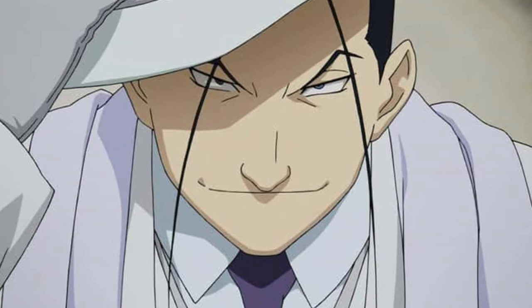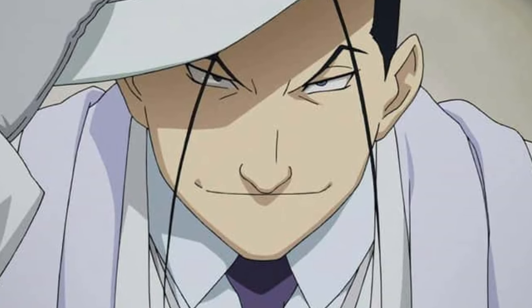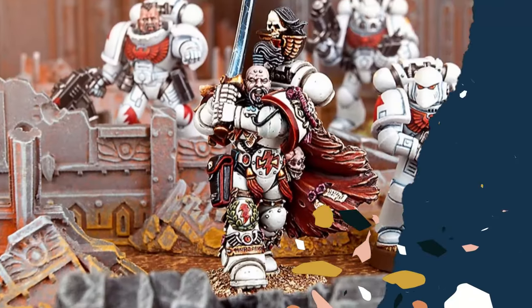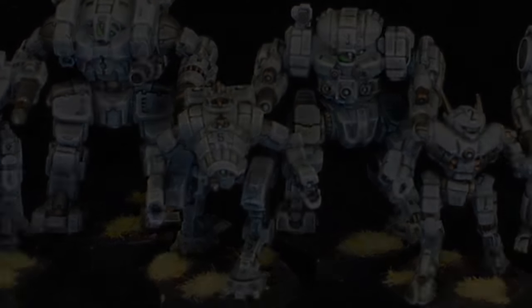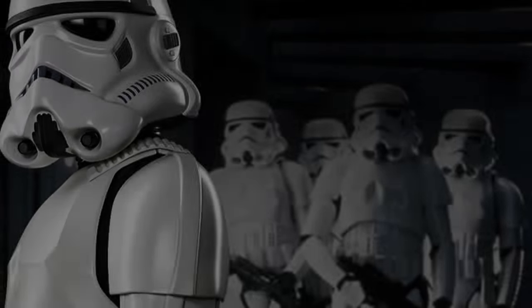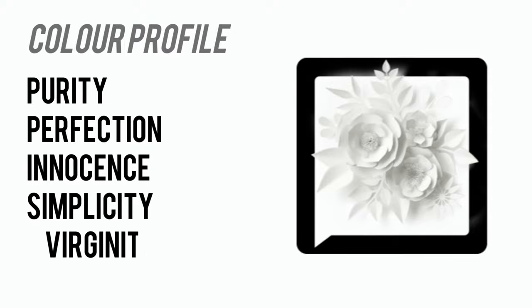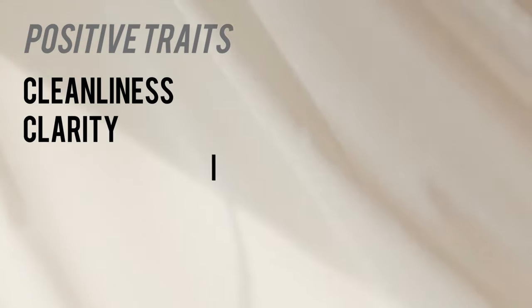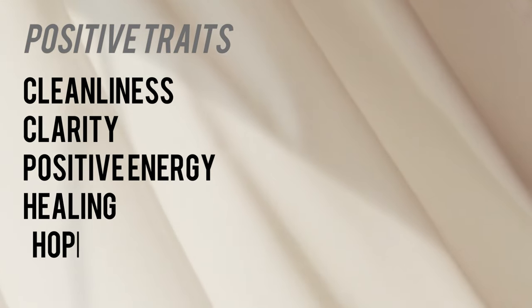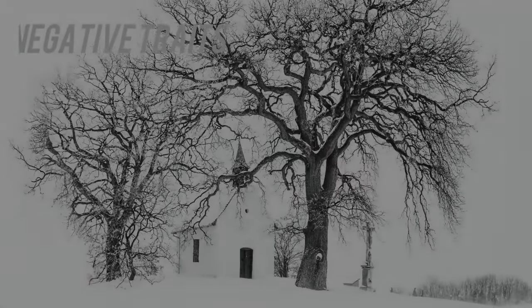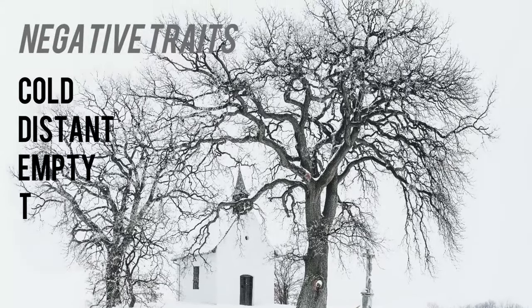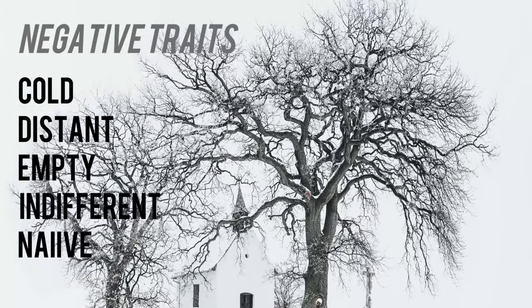Examples of white as the predominant shade in a fighting force: White Scars, Comstar, Protectorate of Menoth, Stormtroopers, and Knights Excelsior. Color associations: purity, perfection, innocence, simplicity, and virginity. Positive traits: cleanliness, clarity, positive energy, healing, and hope. Negative traits: cold, distant, empty, indifferent, and naive.